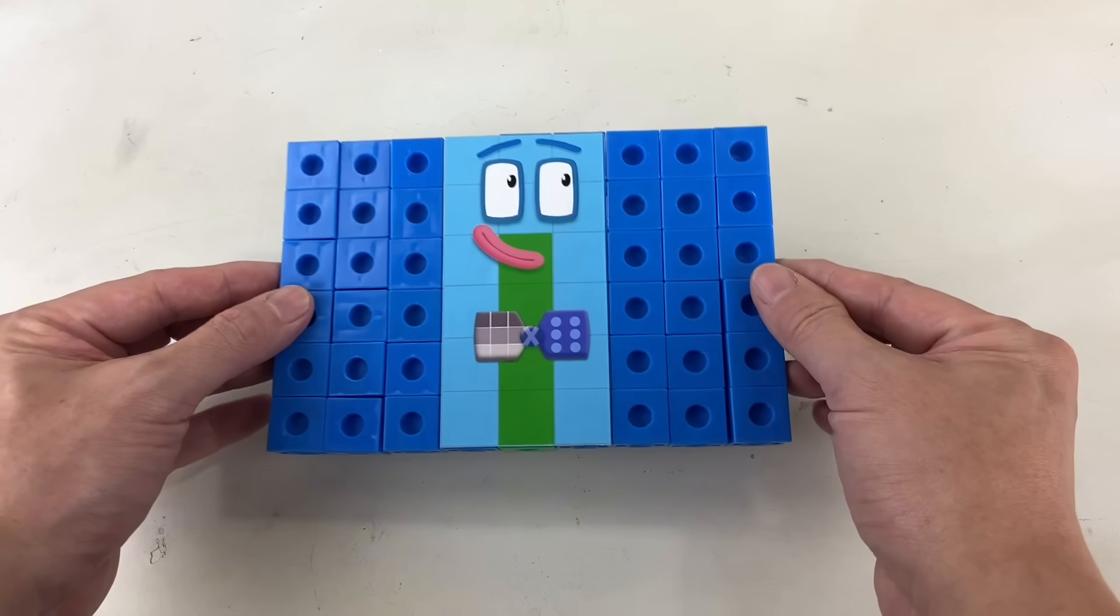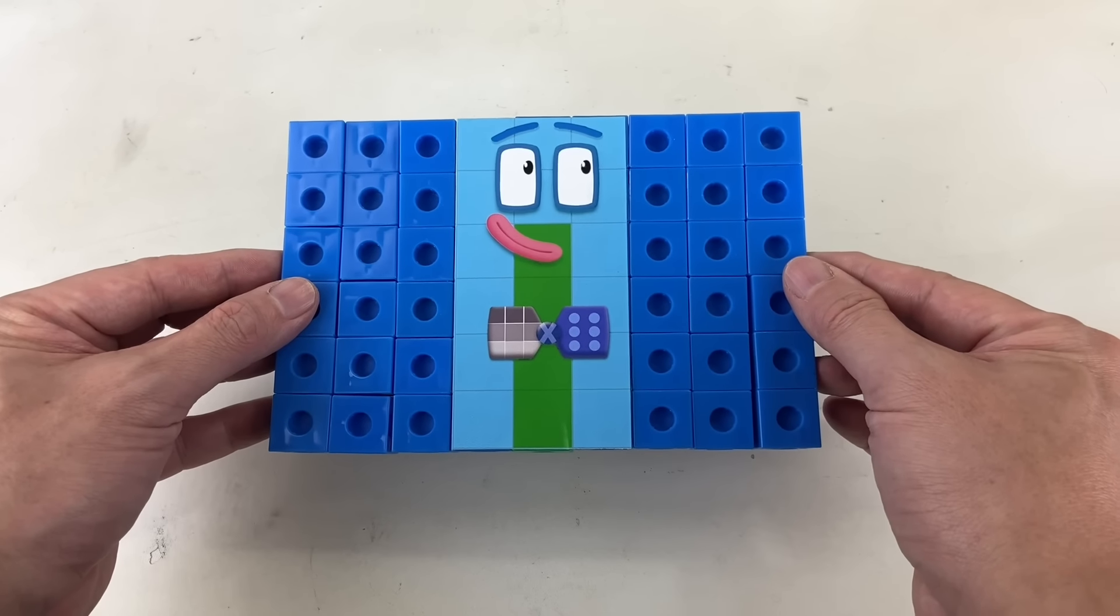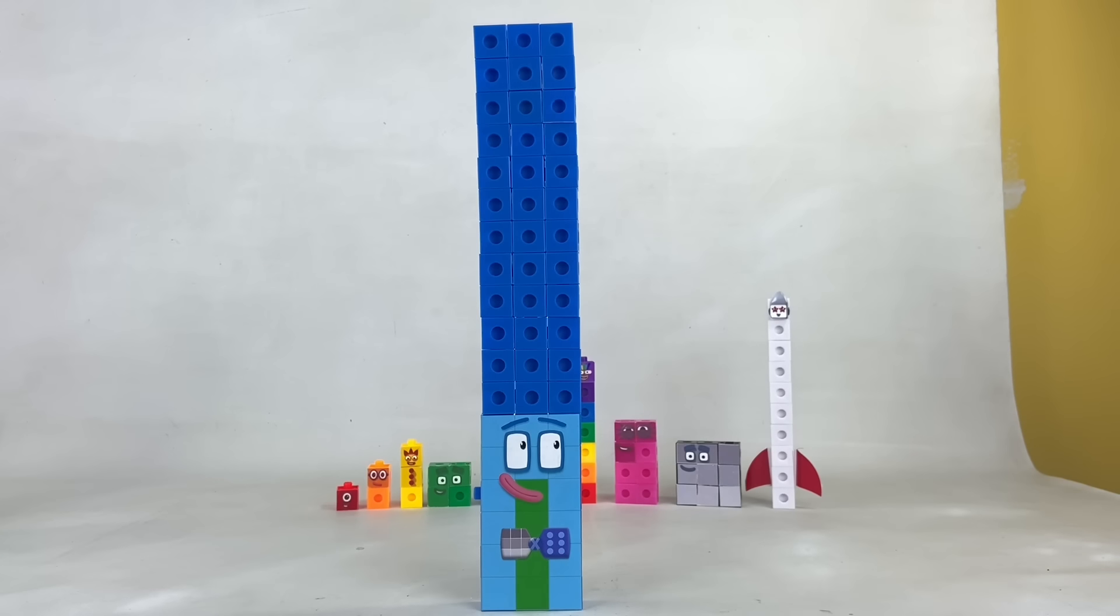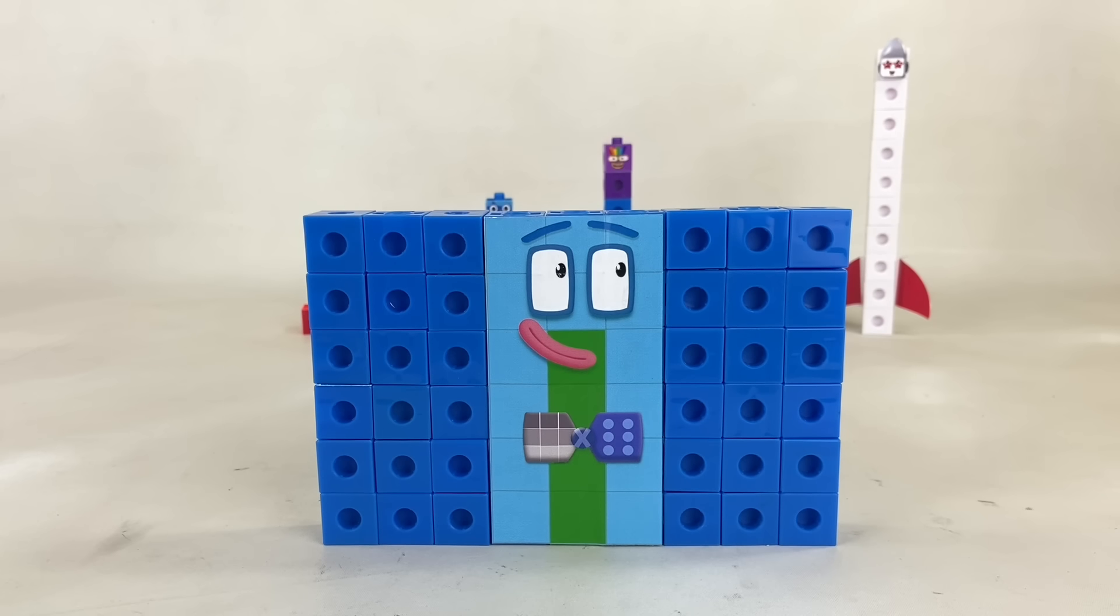54 is also a super rectangle! Because he can be 9 by 6, 6 by 9, 3 by 18, and many more!